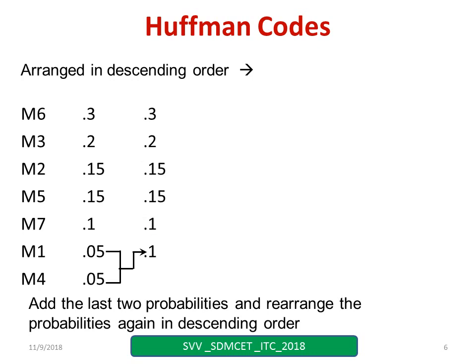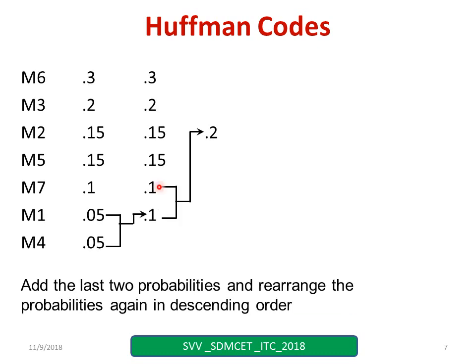Again I have to repeat the same procedure — add the last two probabilities and arrange them in descending order. Now 0.2 will come around here, so that 0.15 and 0.15 I can rewrite here. Simply arrange them in descending order — you can see it: again I add these two and arrange them in descending order. Ensure 0.15 has come here and this 0.15 is written at the last.